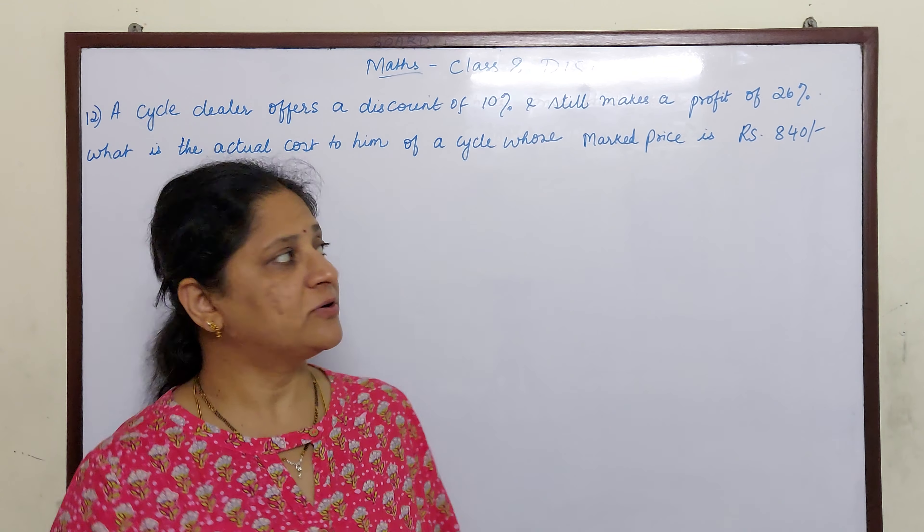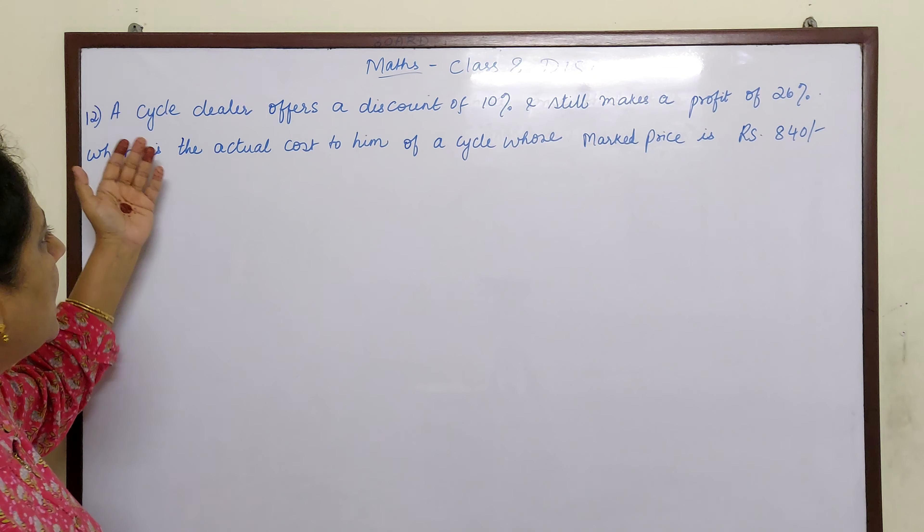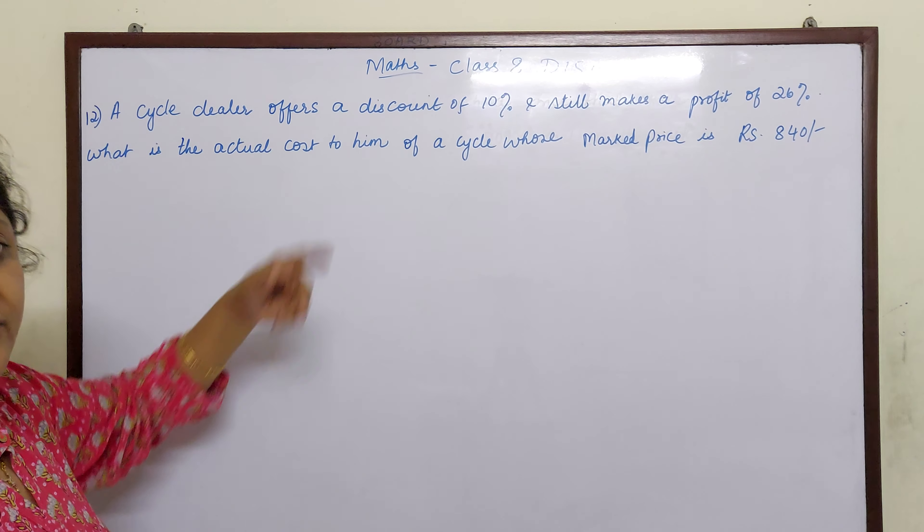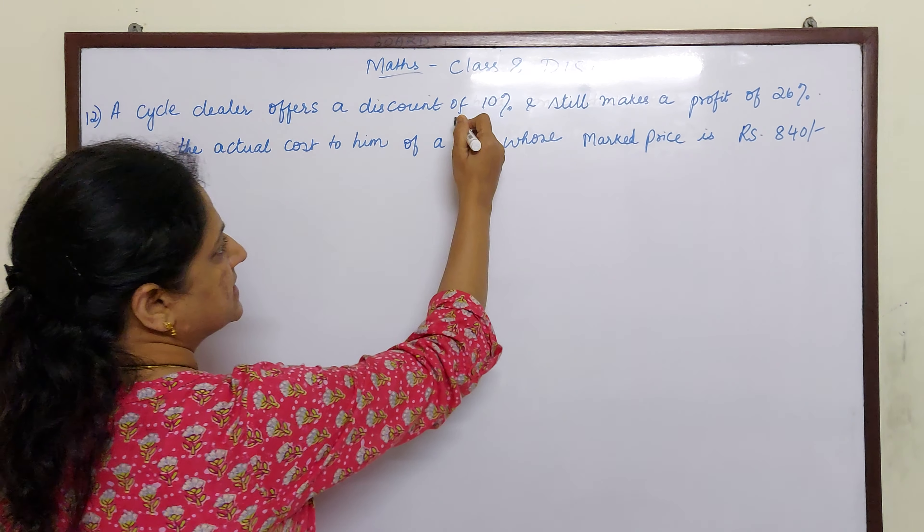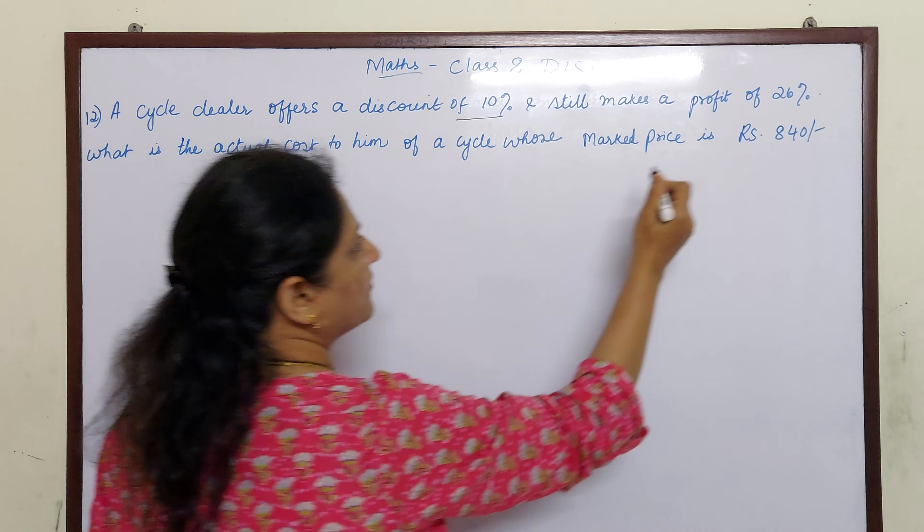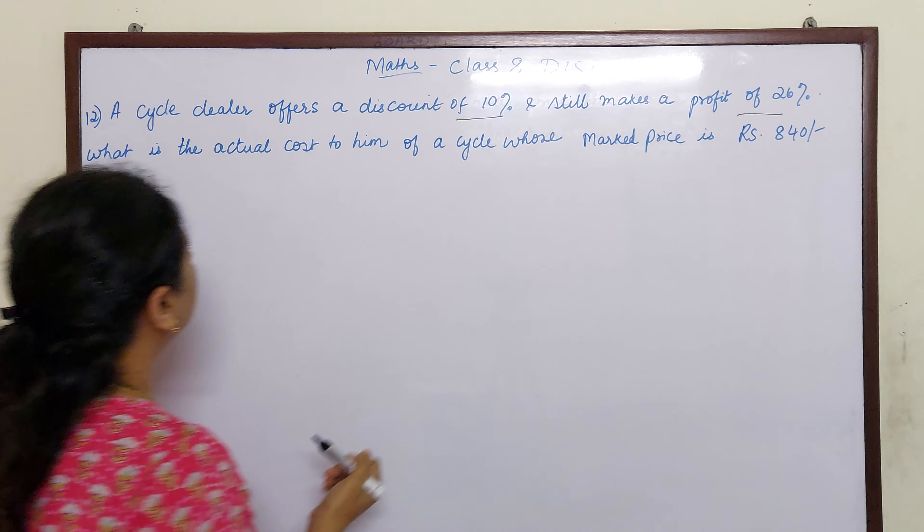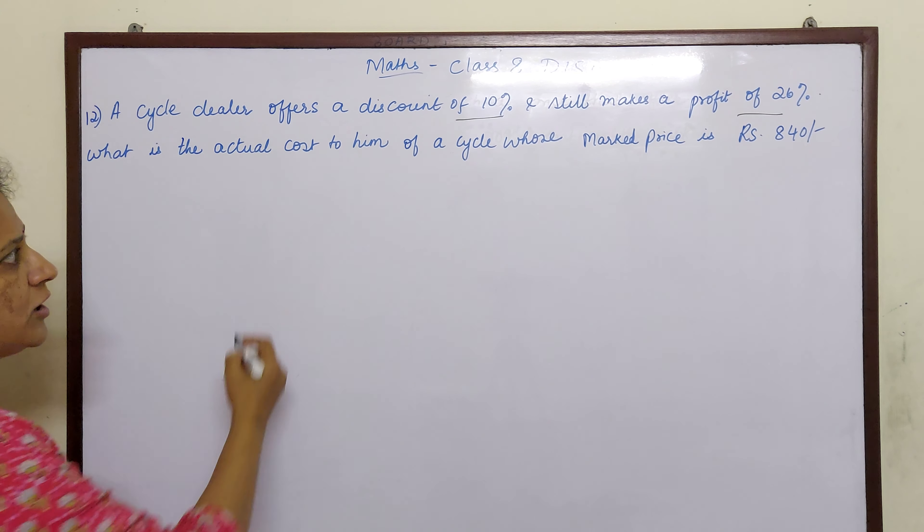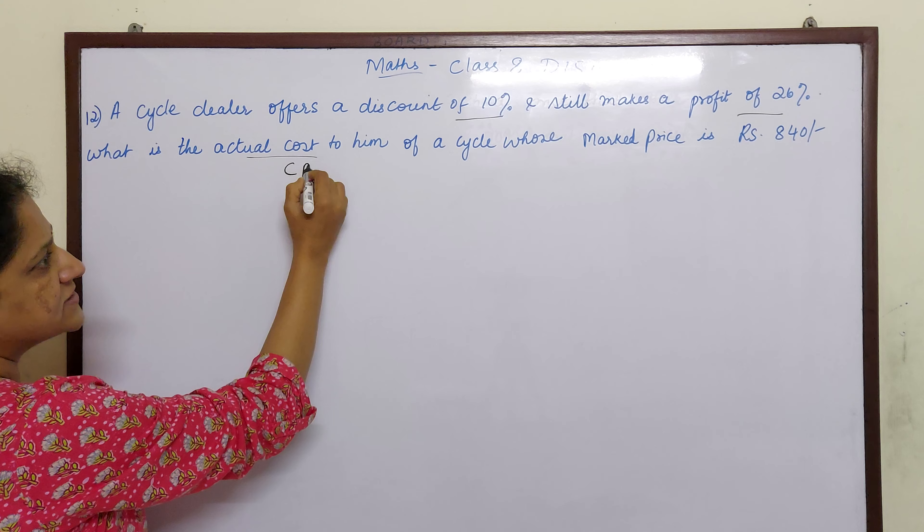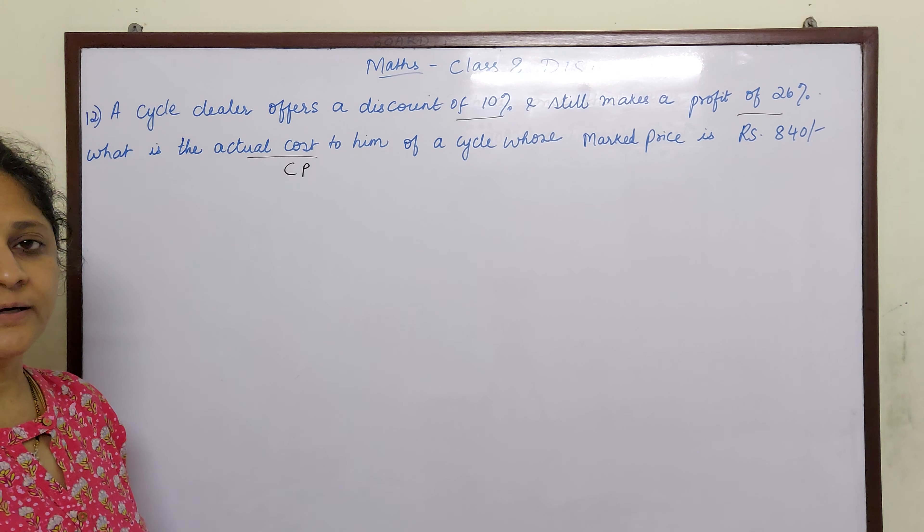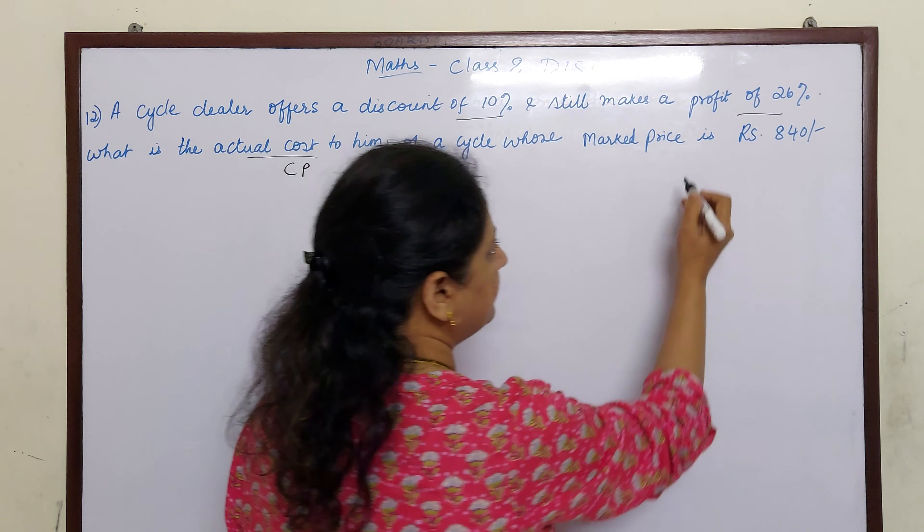Hello children, let us move to the word problem on discount. A cycle dealer offers a discount of 10% and still makes a profit of 26%. What is the actual cost to him of a cycle whose marked price is 840 rupees?